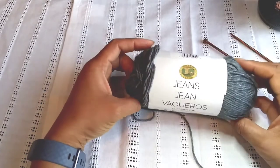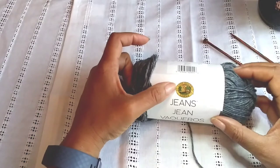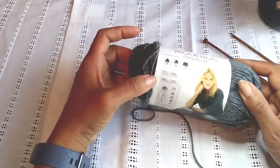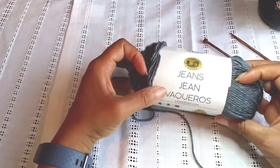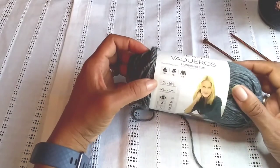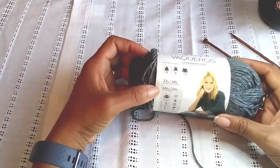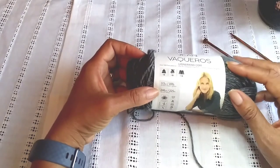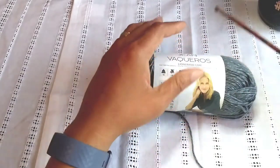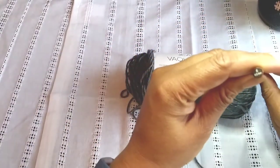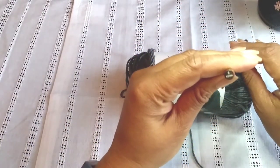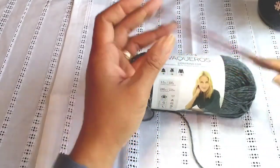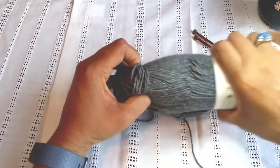For this I'm using the Lion Brand Jeans yarn. It is 100% acrylic worsted weight yarn and there are 246 yards in a skein. I'm also using my number six needles by Knit Picks.